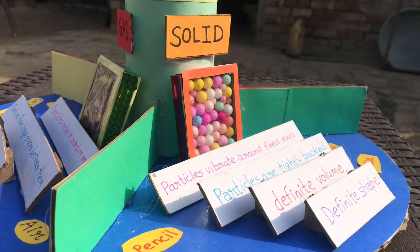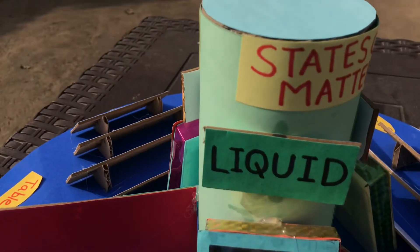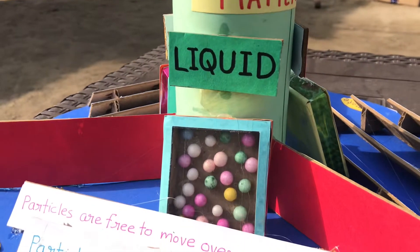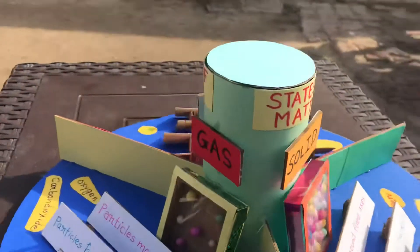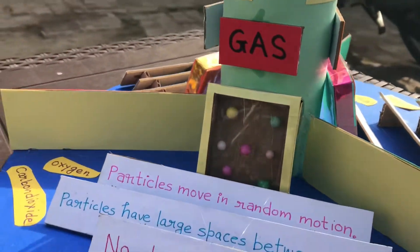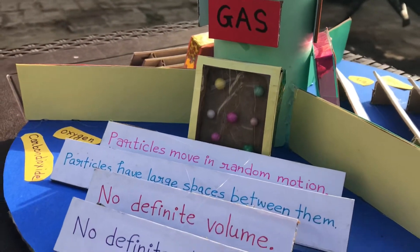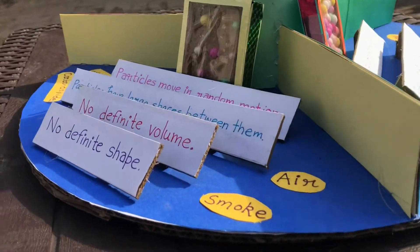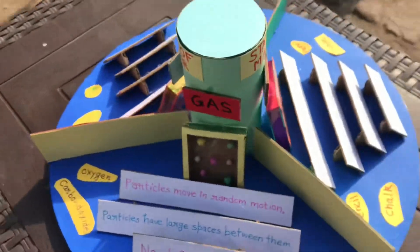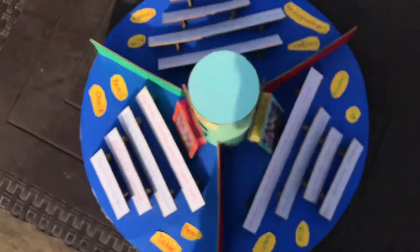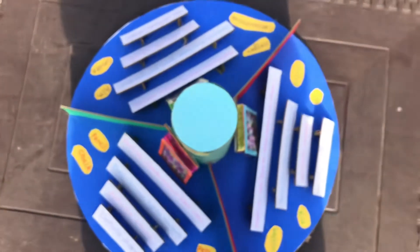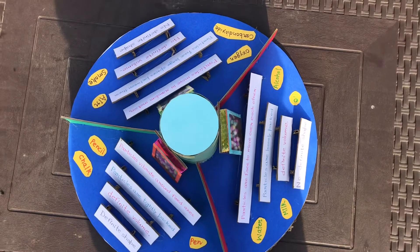The next one is the liquid state. The particles of liquids are loosely packed and they have no definite shape. Then we have the gaseous state — the particles are very distantly placed and we have no definite shape and no definite volume. This model is a circular model, as you can see from the top.